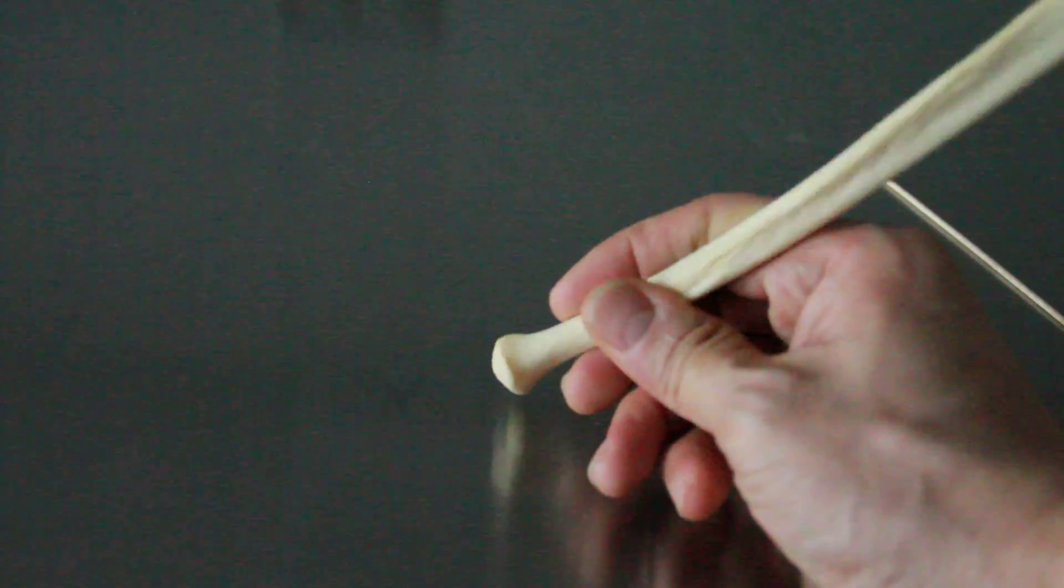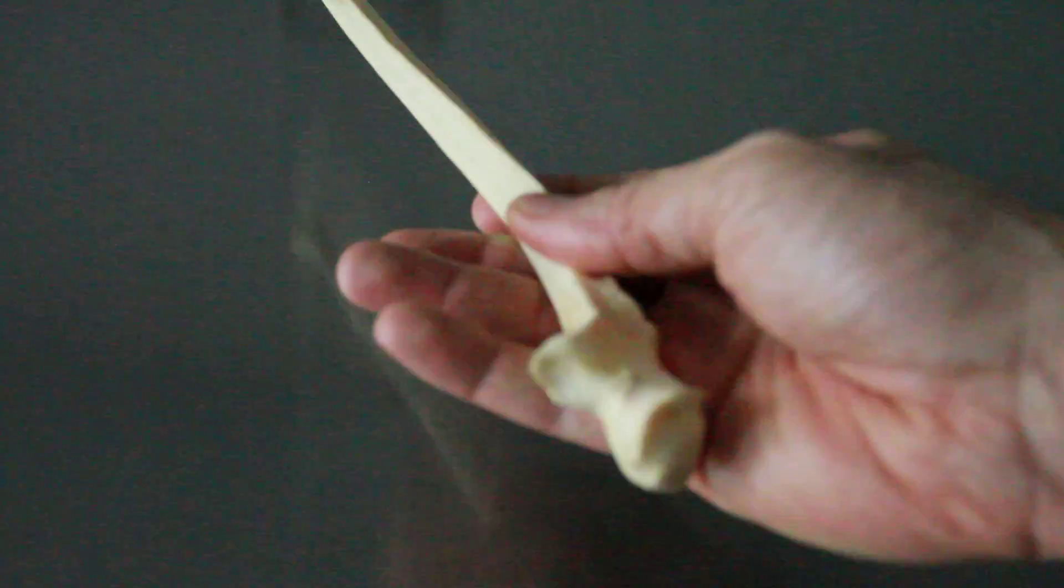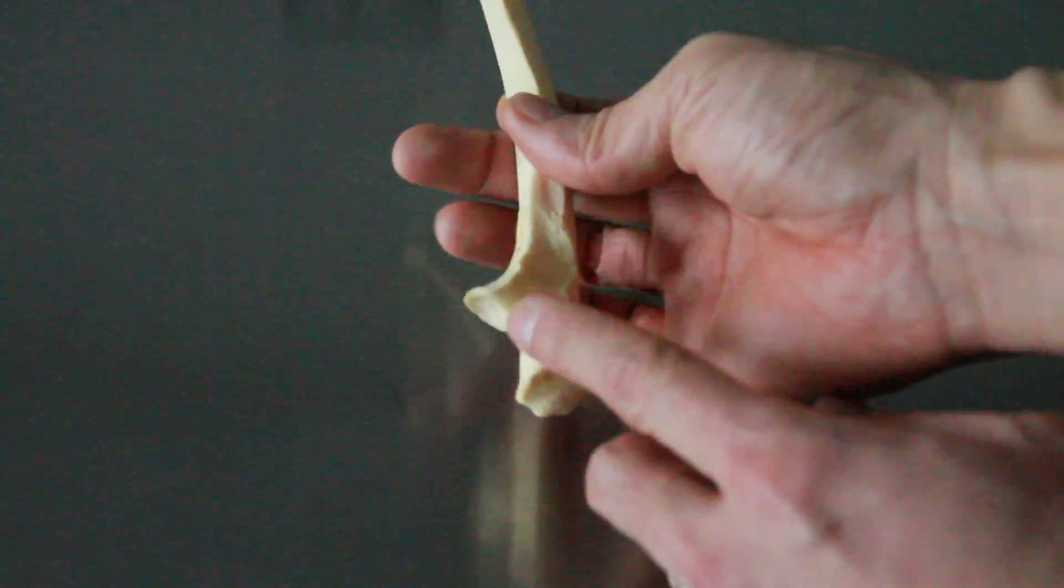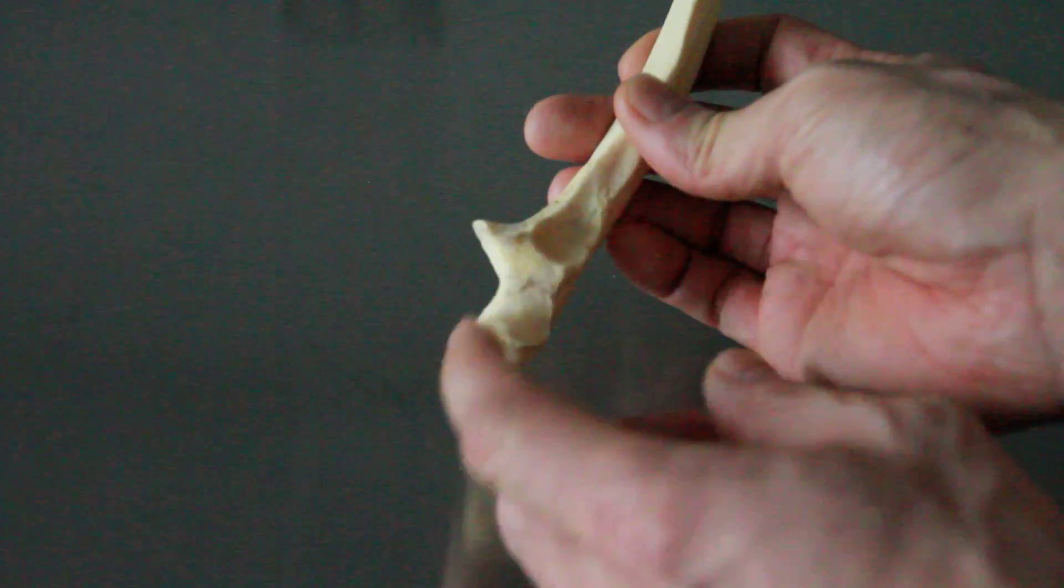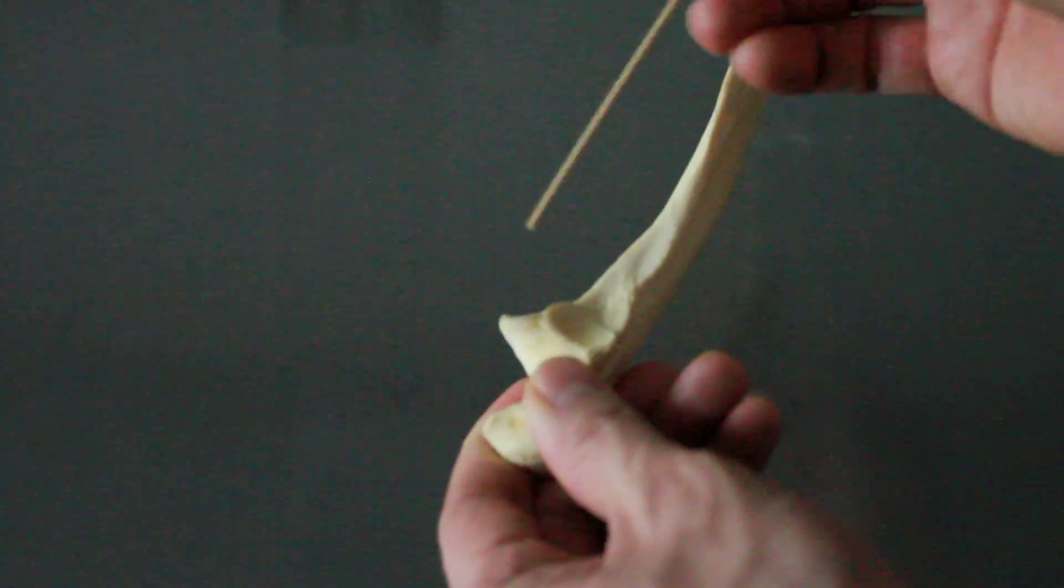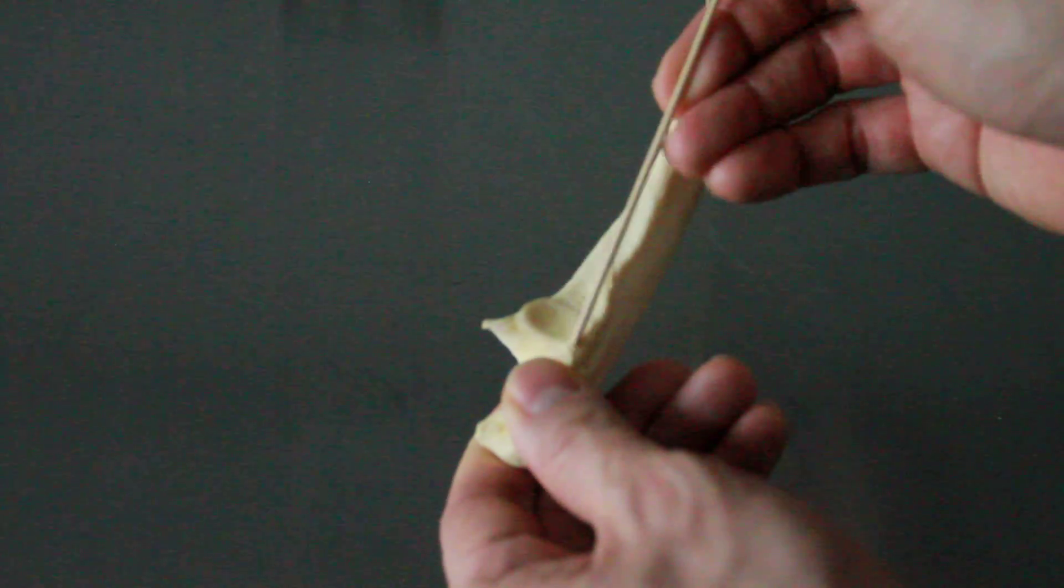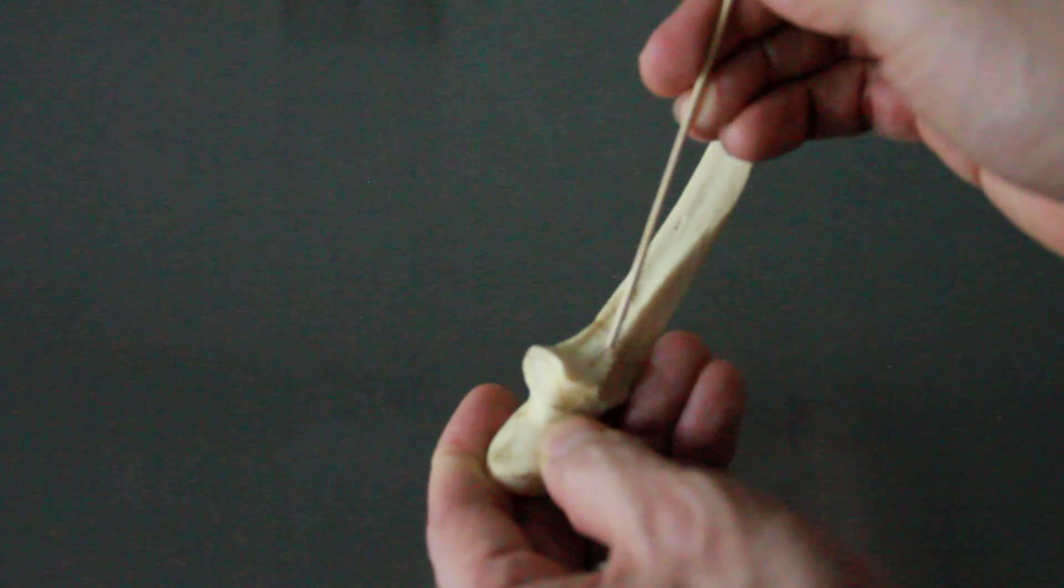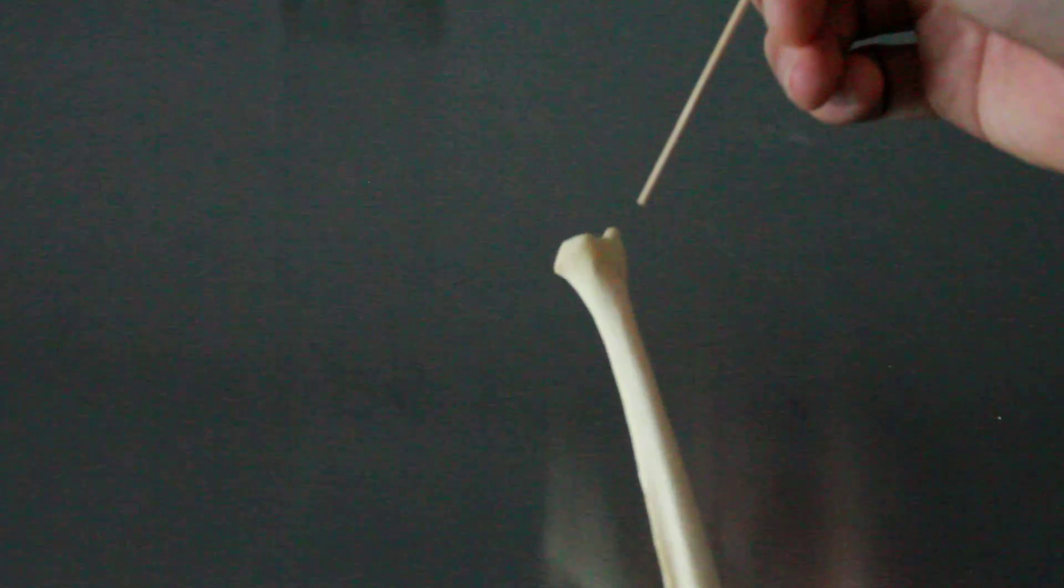Styloid process of the ulna is always distal. Now let's review: olecranon process, trochlear notch also known as semi-lunar notch, coronoid process, radial notch, ulnar tuberosity right around here, head of the ulna, and then styloid process of the ulna.